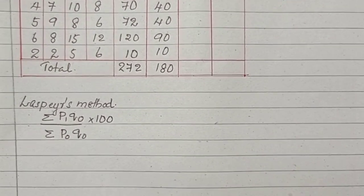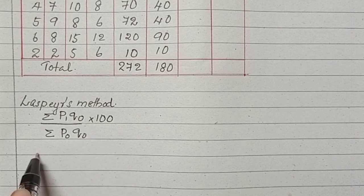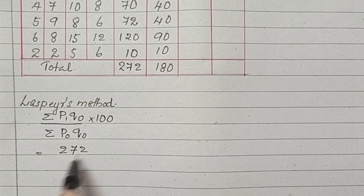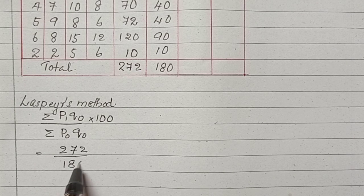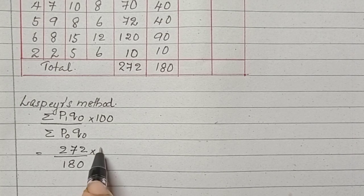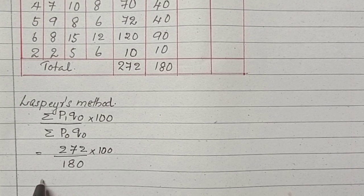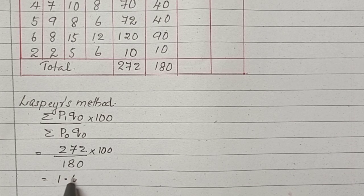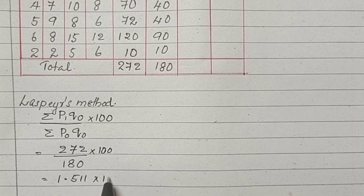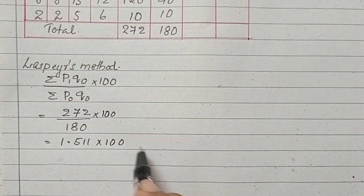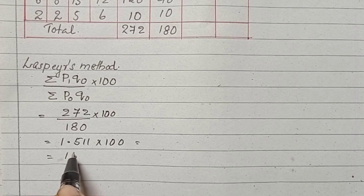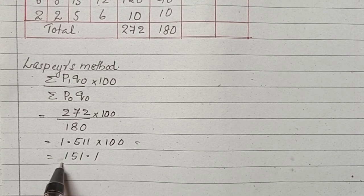Next we are going to do it. Sigma P1 Q0 equals 272 divided by 180 into 100. The answer is 1.511 into 100, which equals 151.1.